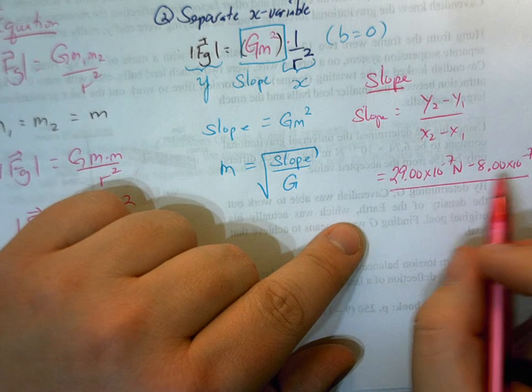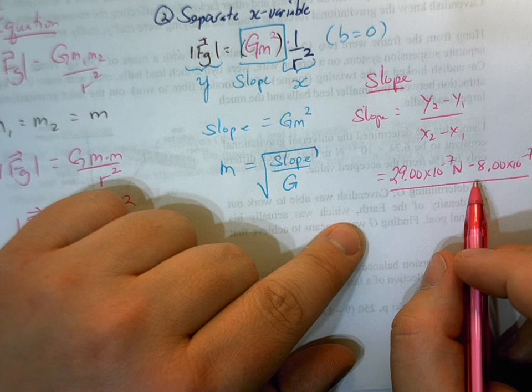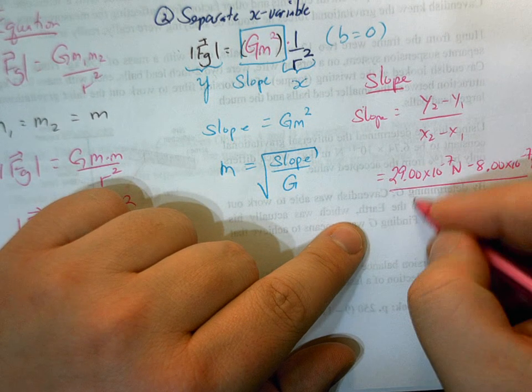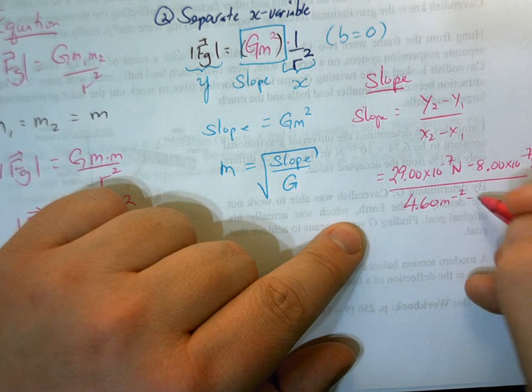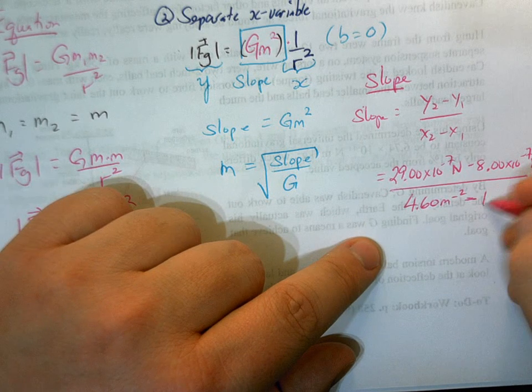So we've got that 29 times 10 to the minus 7 minus 8 times 10 to the minus 7. And then we're dividing that by 4.60. And then we are subtracting off 1.40.